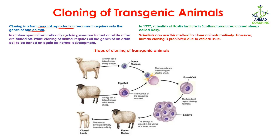In mature specialized cells, only certain genes are turned on while others are turned off, because they are specialized and they know what to do. So accordingly, they are going to express some genes while stopping the expression of others. During the cloning of an animal, it requires all the genes of an adult cell to turn on, because we need that cell to be differentiated into a complete adult — no gene should be off.